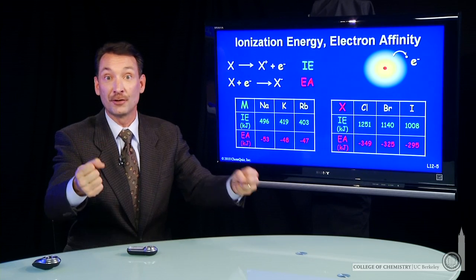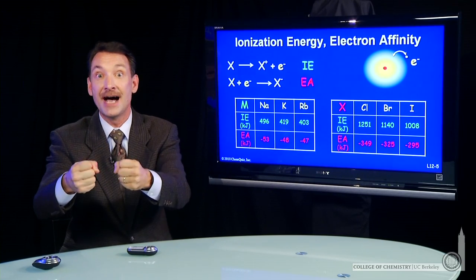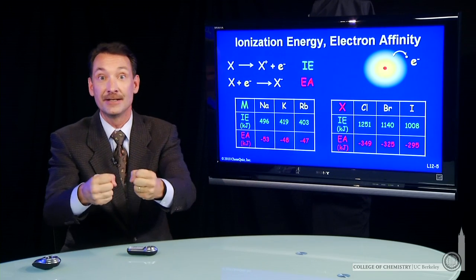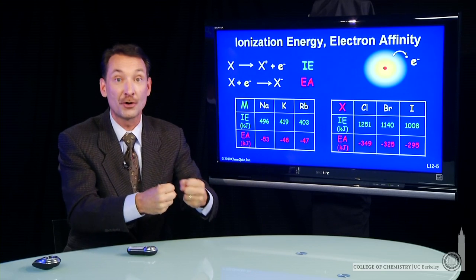then the sodium and chlorine ions can form this plus, minus, plus, minus ionic lattice of coulombically attracted sodium and chlorine ions. And that's a tremendously stable, strong interaction.